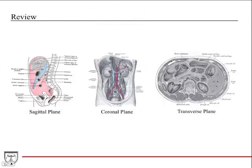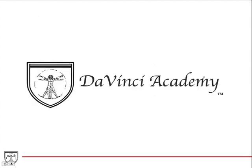All three planes shown together: the sagittal is the side view, the coronal view is a deep front view, and the transverse or axial plane is a horizontal view of the structures. These are three different ways of looking at the same region of the body. And that's it for lecture one.